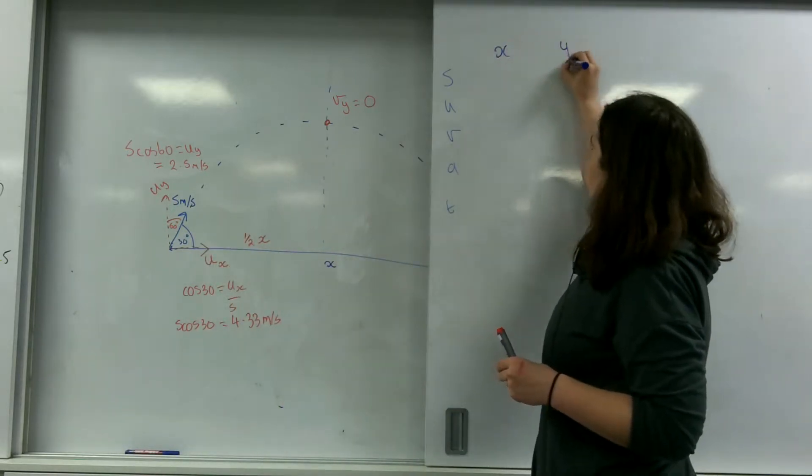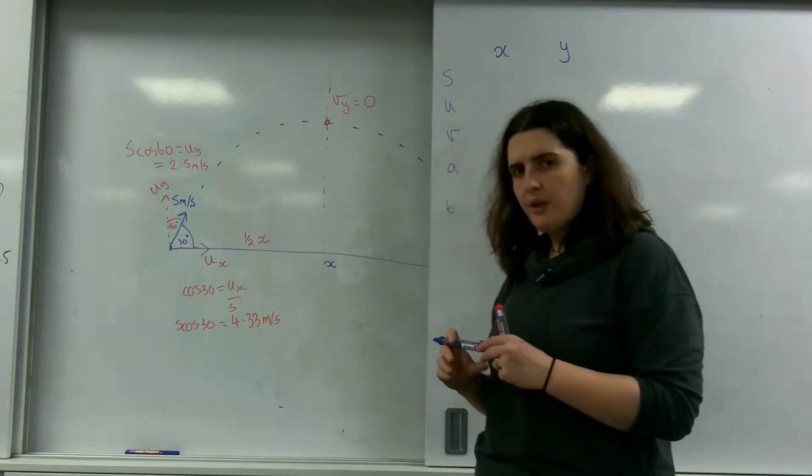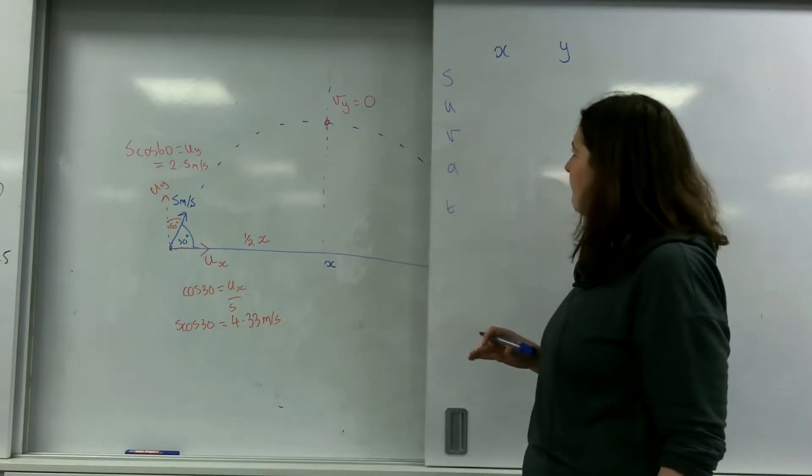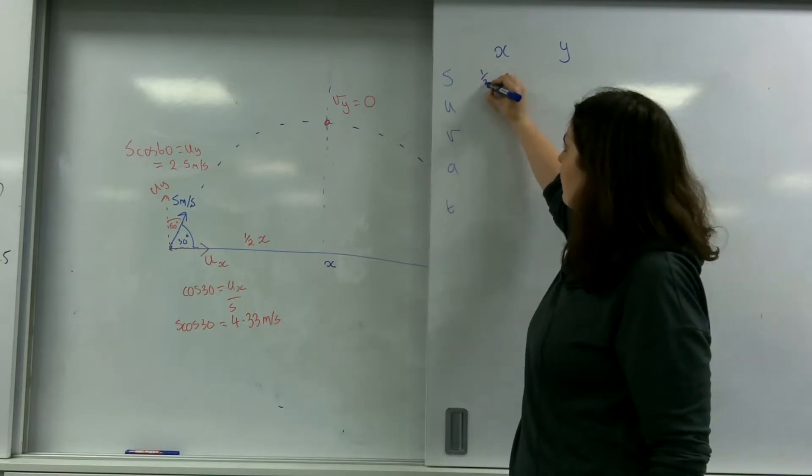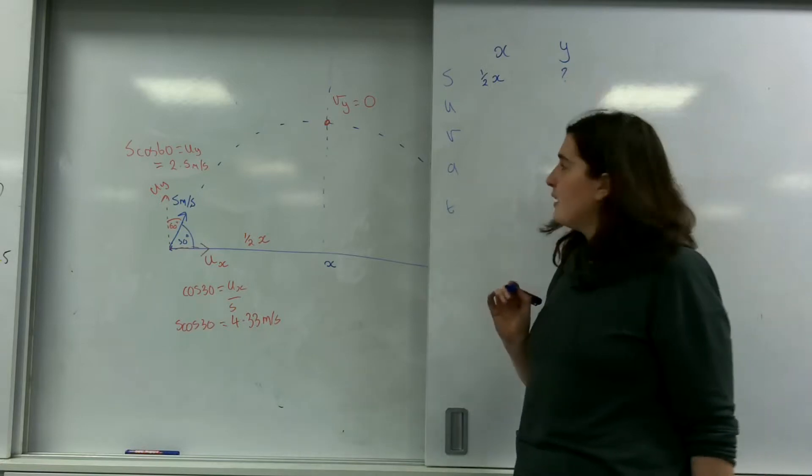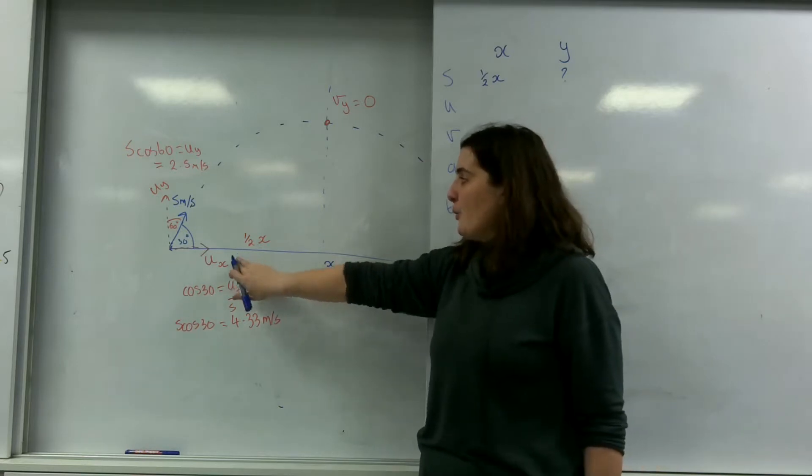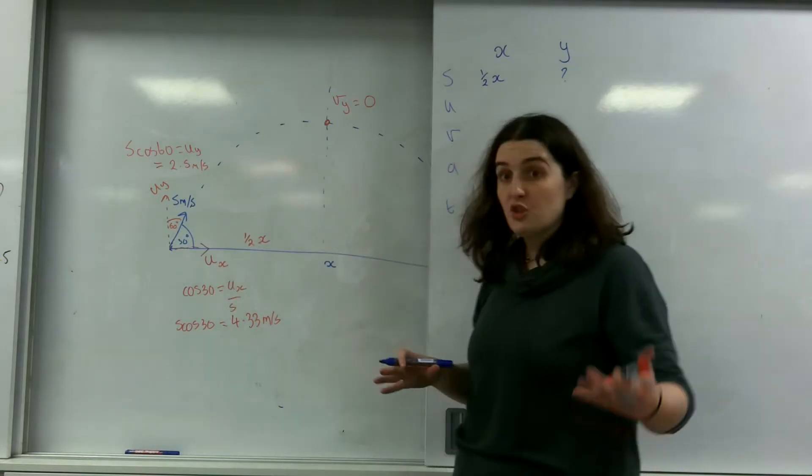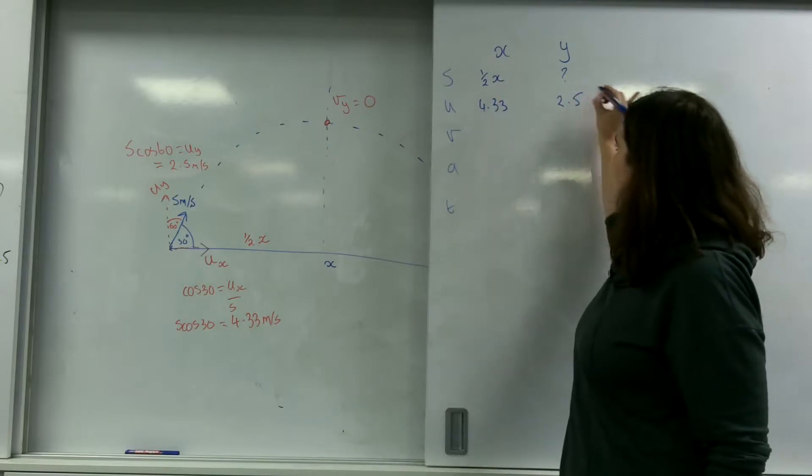Again, x and y. And I'm going to work only in one direction. I'm only going to work to halfway. So in the x direction, my distance would be a half x. I don't know that value. My initial velocity... Now this is where the components come in. I know my x velocity and I know my y because I took my components earlier. So this is going to be 4.33 and this is going to be 2.5.